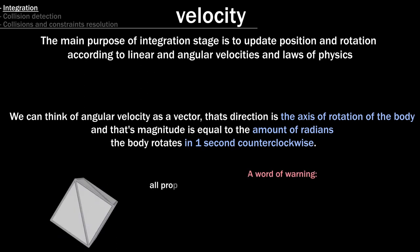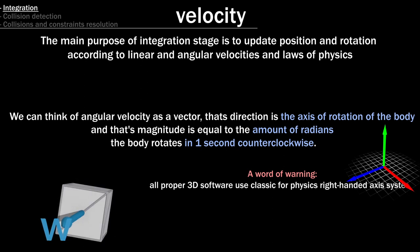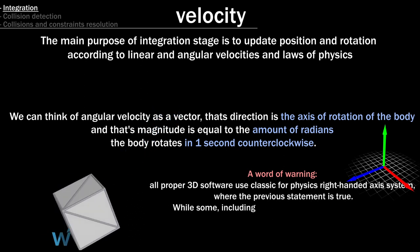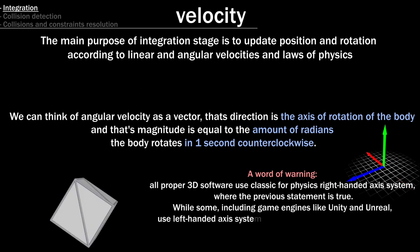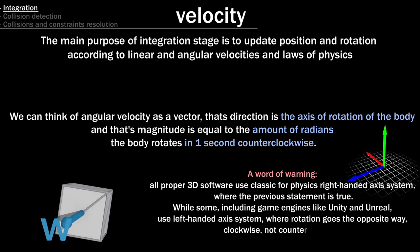A word of warning, all proper 3D software use classic for physics right-handed axis system, where the previous statement is true. While some, including game engines like Unity and Unreal, use left-handed axis system, where rotation goes the opposite way, clockwise, not counterclockwise.